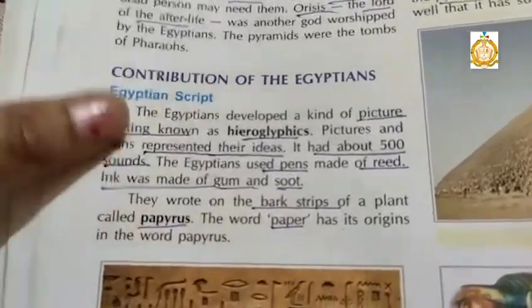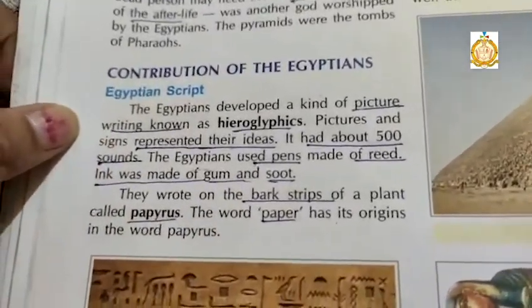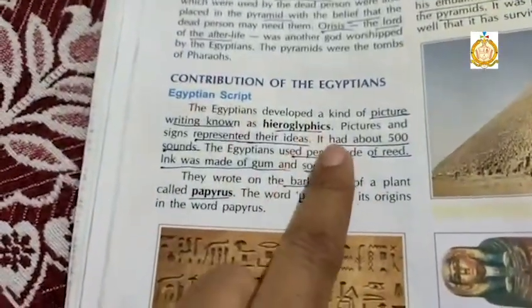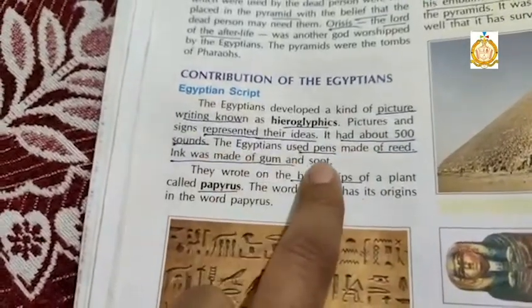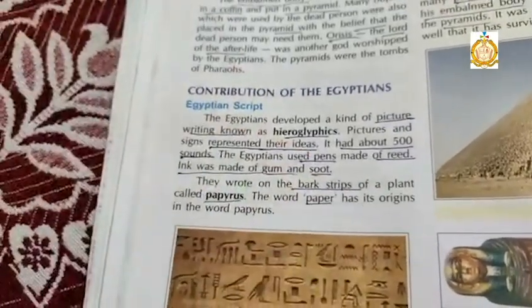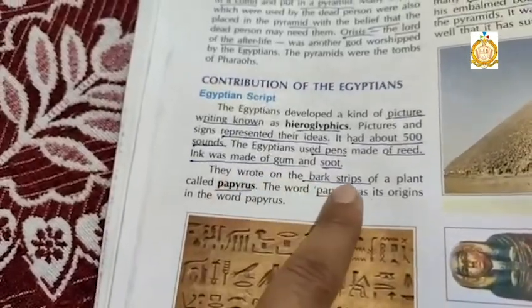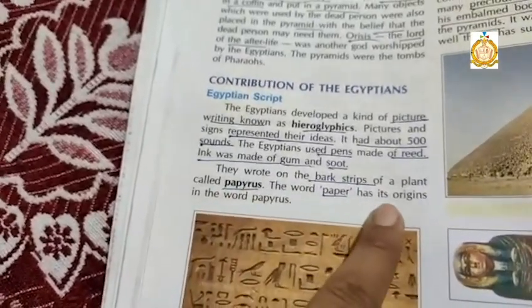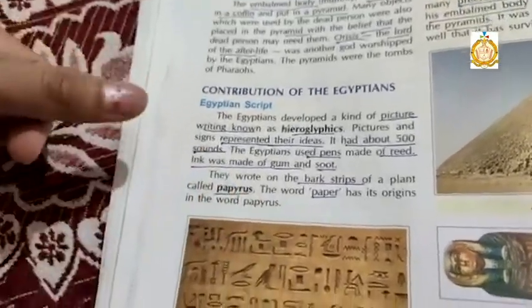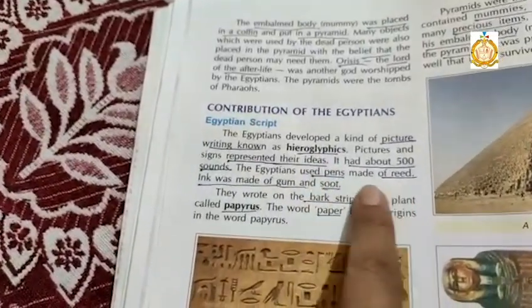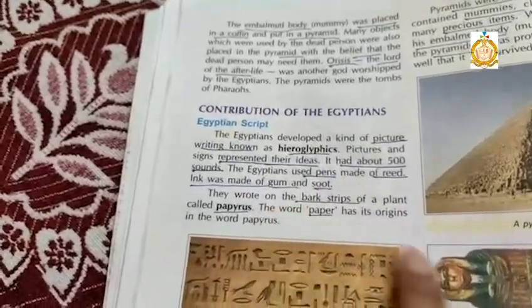The first contribution of the Egyptian civilization is the Egyptian script. The Egyptians developed a new system of writing known as hieroglyphics. It was a picture writing system where pictures and signs represented different ideas. It had about 500 signs. The Egyptians used a pen made of reed, and ink was made of gum and soot. They wrote on bark strips of a plant called papyrus, which is an aquatic plant. The word paper has its origin in the word papyrus.